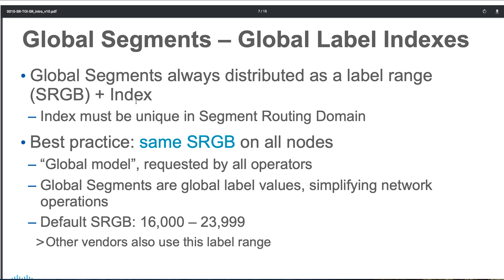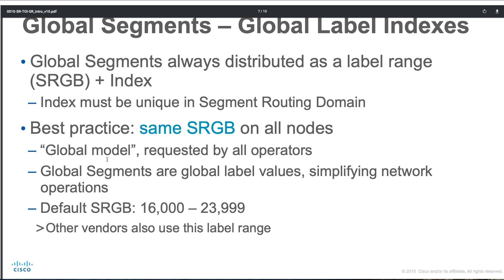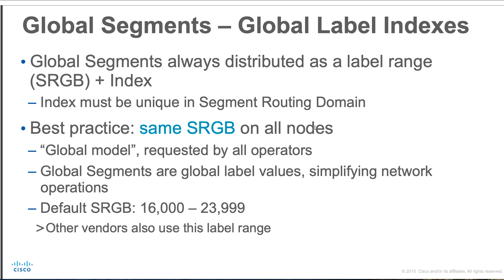Local segments are MPLS locally allocated labels. Global segments are always distributed as a label range — the SRGB has a base number, and then you configure an index value on top of it. Best practice: when configuring a Segment Routing Global Block, try to keep it the same across all nodes. Even though you can use a different range, Cisco really recommends this as a best practice because it makes life especially easy when troubleshooting.